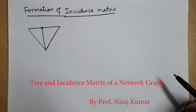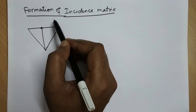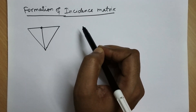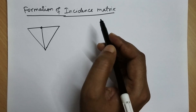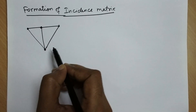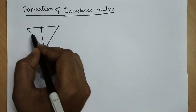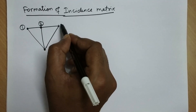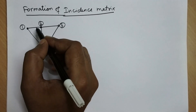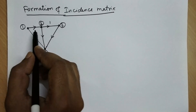Hello friends, welcome again. In this video we are going to study the formation of incidence matrix. This topic is in continuation with the previous topic on graph theory, where we studied how to make a directed graph of any given circuit and how to assign different nodes and branches.